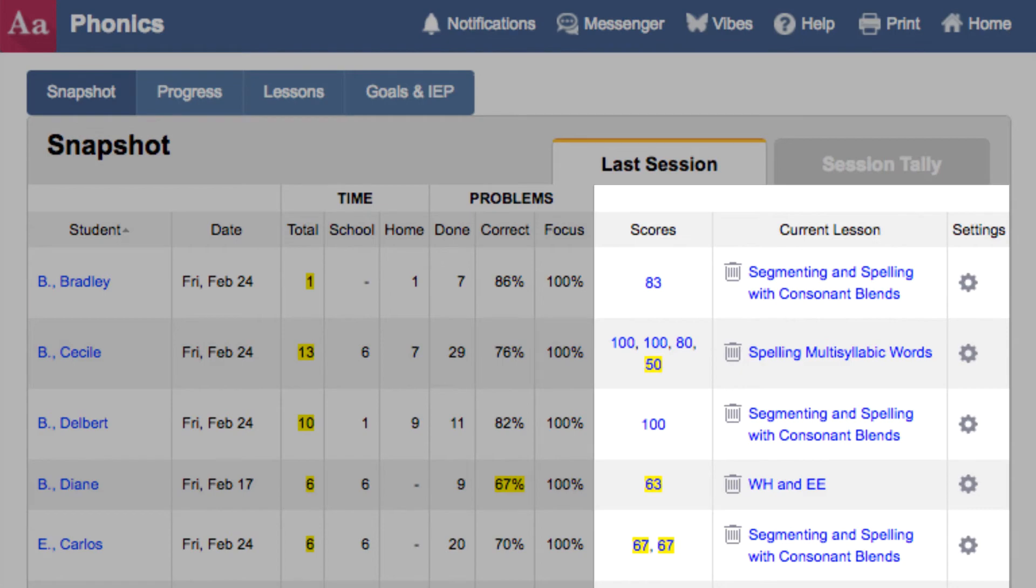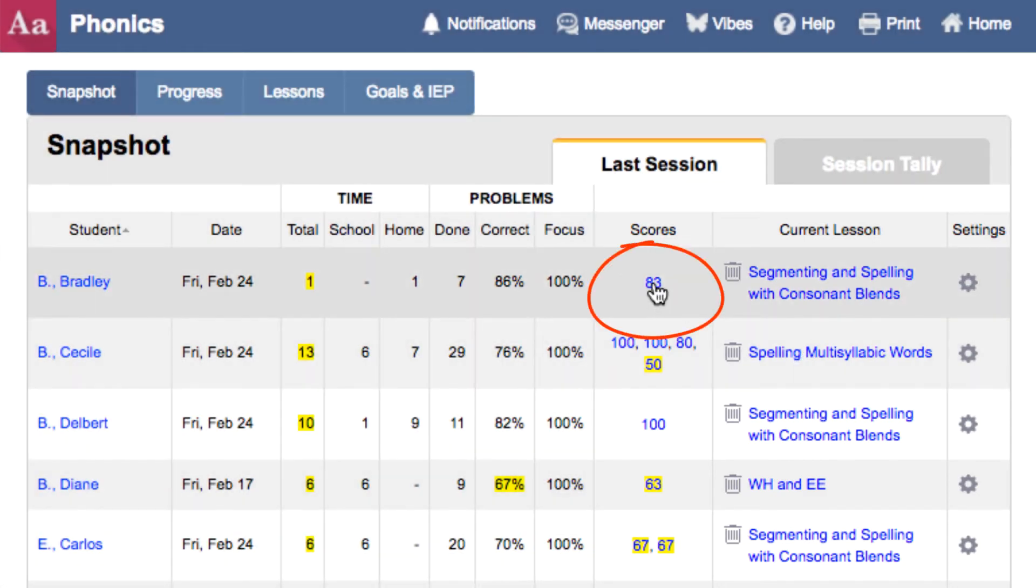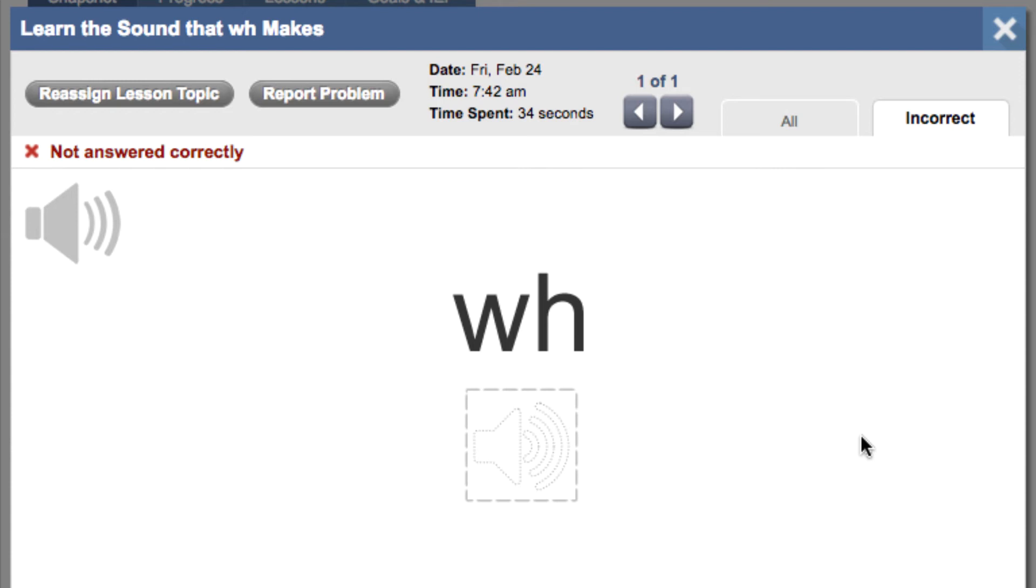The lesson topics are graded, and if you click on any of the scores, you can see exactly which questions the student got incorrect and how much time they spent on the question.